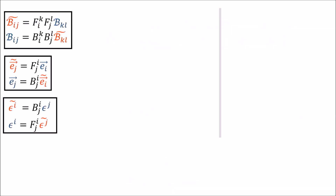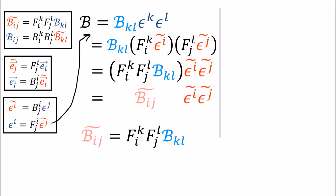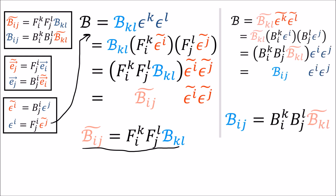First, we'll look at the transformation rules. If we assume we can write any bilinear form as a linear combination of covector-covector pairs, we get the transformation rule by transforming the basis covectors individually. Since basis covectors are contravariant, to build old from new we use the forward transform F. Putting these in front gives us the correct transformation rule, and we can go through a similar process for the reverse transformation.